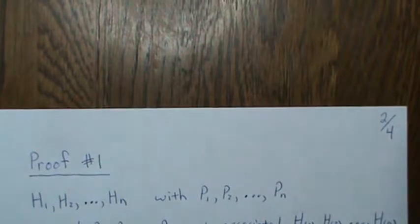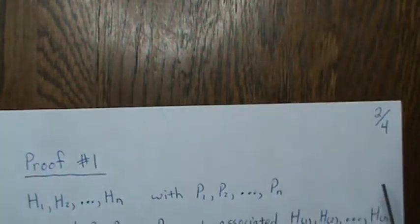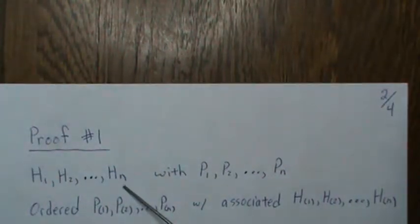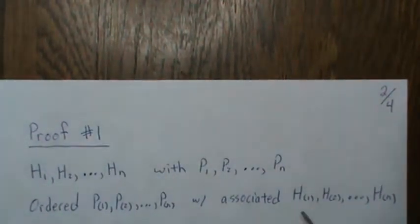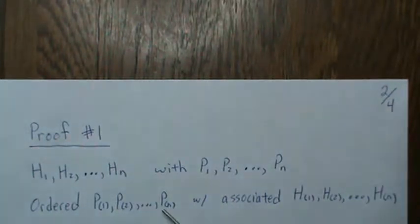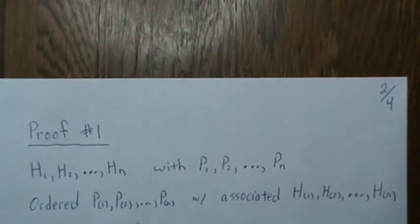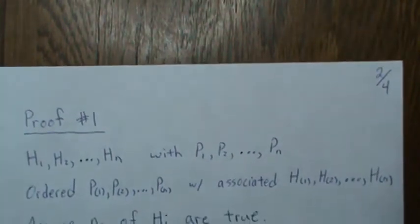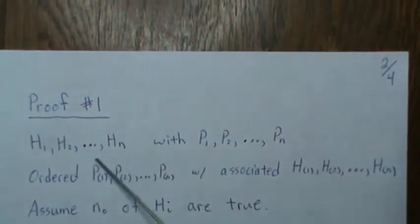So here we have our n hypotheses and the p-values associated with these hypotheses — these are null hypotheses. We order the p-values and drag along the hypotheses associated with each. In order for us to commit a type one error, there have to be some true null hypotheses that we reject. So let's assume there are n₀ of these hypotheses that are true.